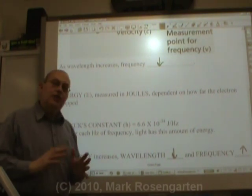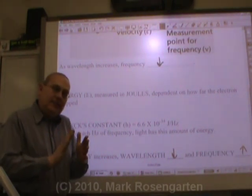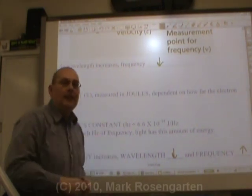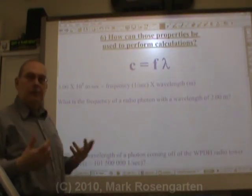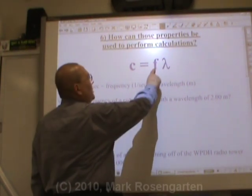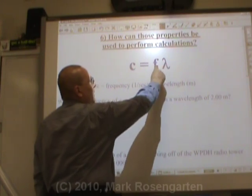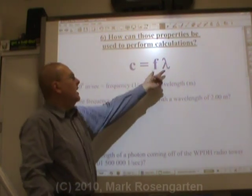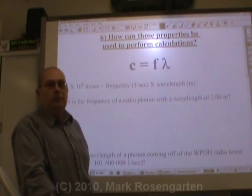The more energy light has, the shorter its wavelength gets, and therefore the higher the frequency of wavelengths that pass you. You can use this to calculate a couple of variables. If you know the frequency, you can find the wavelength, and if you know the wavelength, you can find the frequency, because when multiplied, they equal a constant — c, the speed of light.